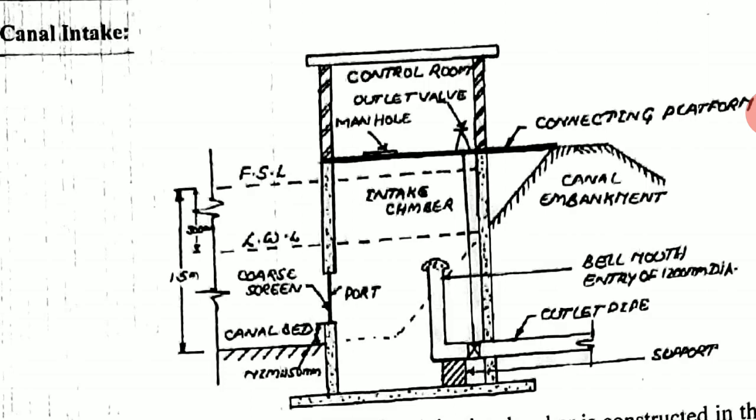The entry of water into the intake chamber takes place through a coarse screen, and the top of the outlet pipe is provided with a fine screen. The water enters through the coarse screen into the intake chamber. While entering, the water physically purifies itself because the coarse screen removes all physical impurities.